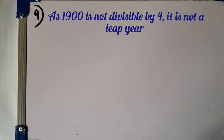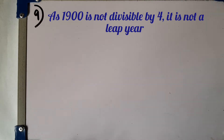Question number 9. Is the year 1900 a leap year? Give reasons for your answer. 1900 is not a leap year as this year is not divisible by 400. With years that are multiples of 100, we have to check whether they are divisible by 400.